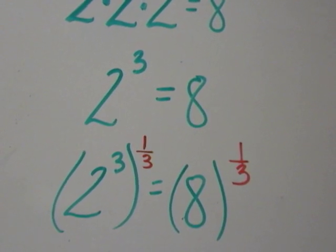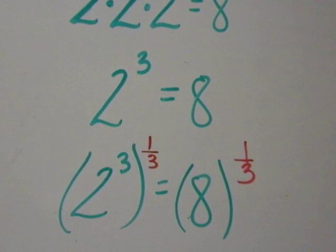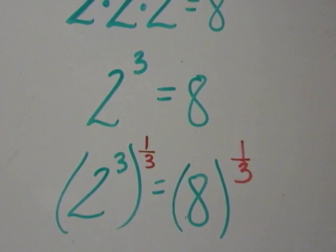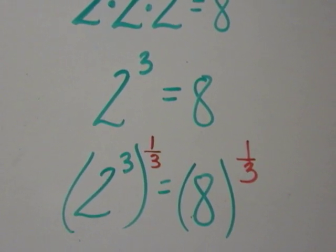But if I have to take the 2 to the third raised to the 1 third power to get rid of the 3 over there, whatever I do to one side of an equation, I have to do to the other. So apparently that's the same as 8 to the 1 third power.